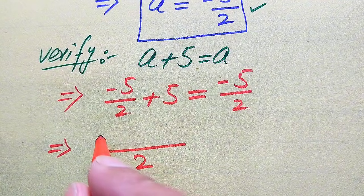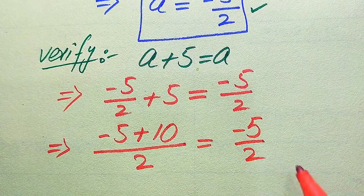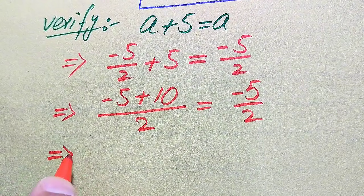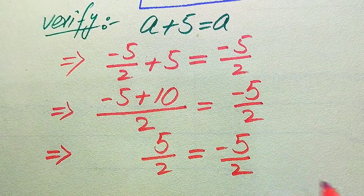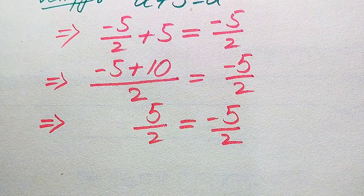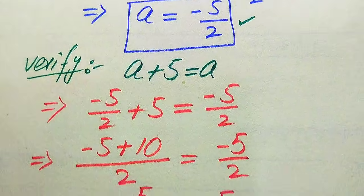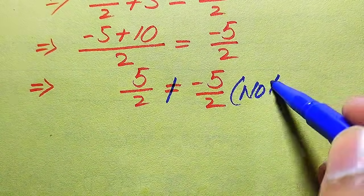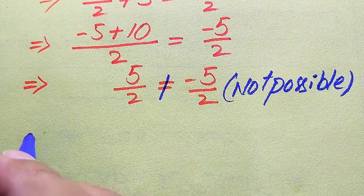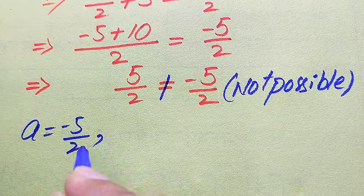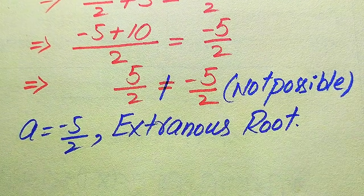Taking the LCM on the left-hand side gives us LCM of 2, so we get √((−5 + 10)/2) = −5/2, which simplifies to √(5/2) = −5/2. Since 5/2 ≠ −5/2, both sides are not equal. This means a = −5/2 does not satisfy the equation — it is not a solution. Therefore, a = −5/2 is an extraneous root of the given equation.